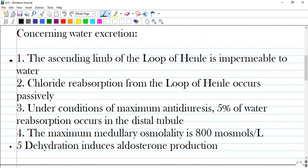So I will go through the options. The ascending limb of the loop of Henle is impermeable to water. It is correct.